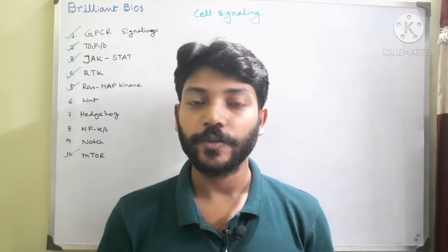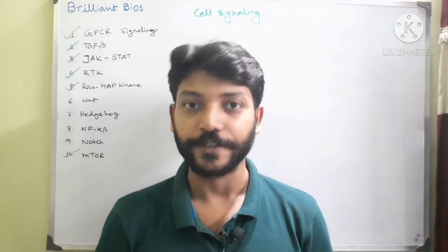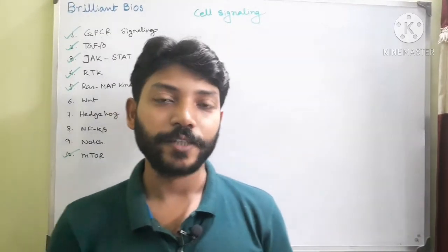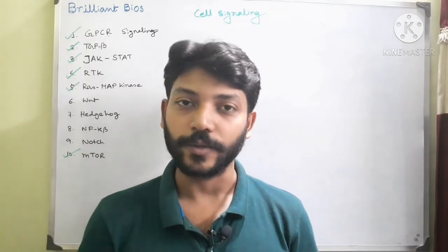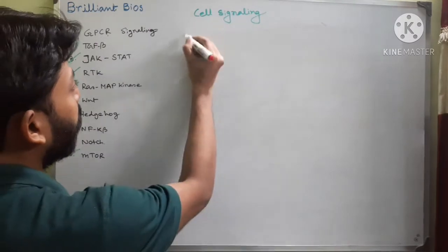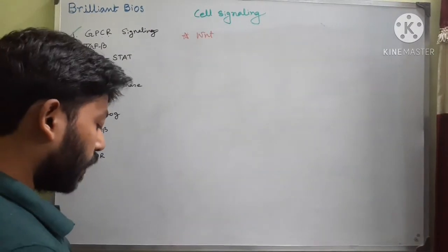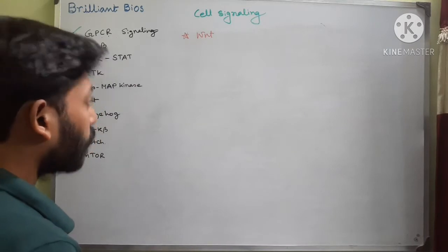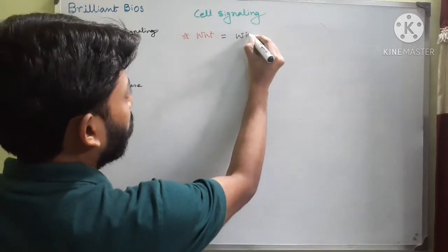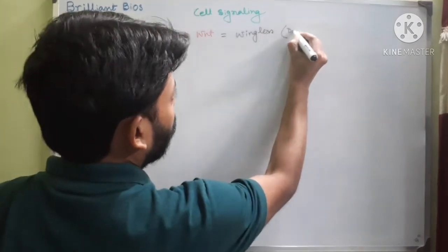Welcome, dear students. In this video we are going to learn about another important cell signaling pathway called the Wnt pathway. At first I will show you some important facts about this pathway and then go into details. The first important point you have to remember is the name Wnt — this name is actually an amalgamation of two words. The first word comes from Drosophila and the gene name is 'wingless.'